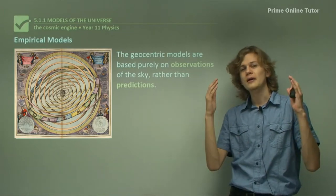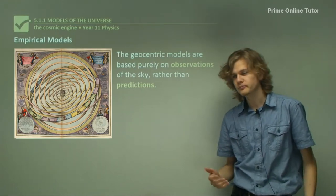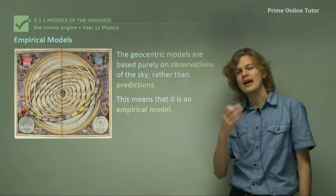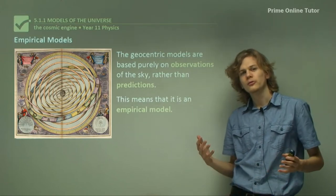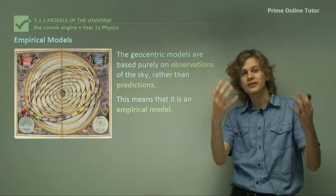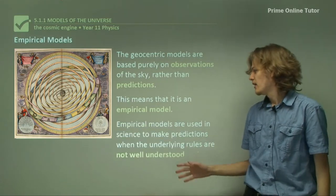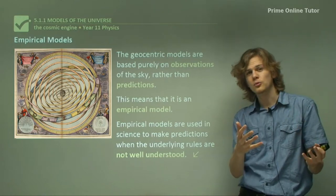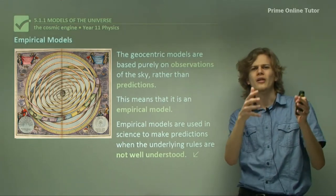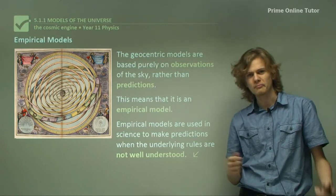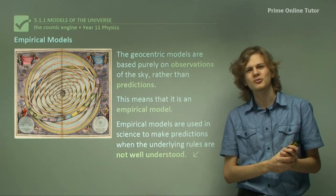So the geocentric models are based on empirical data. They're based on observations in the sky and not predictions, not mathematical models. This means it's called an empirical model. An empirical model is based on data and not based on models. Empirical models are usually very useful for predicting how a system will behave, even if you don't understand the mechanics behind it. Empirical models are used even today in science to make predictions when the underlying principles of something are not well understood. It's like noticing something happen 50 times and saying there must be a rule that that happens, but not knowing why. So this is the end of the theory. Let's go on to some questions.